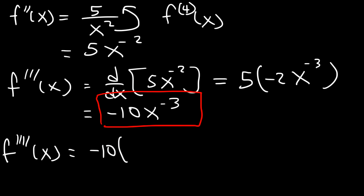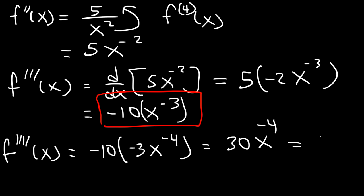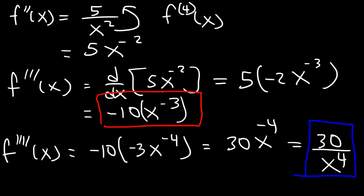So now we need to find the fourth derivative. It's going to be negative 10 times the derivative of x to the negative third, which is negative 3x to the negative 4. And negative 10 times negative 3 is 30. So we have 30x to the negative 4, which we can rewrite as 30 divided by x to the fourth power. If you're given the second derivative, you need to differentiate it two more times to get to the fourth derivative. And that's just the basis of higher order derivative problems — you just need to find the second, third, or fourth derivative.